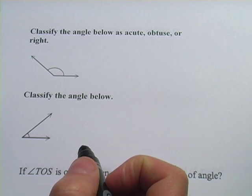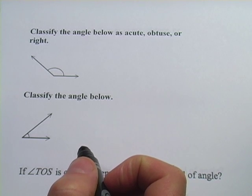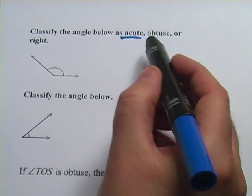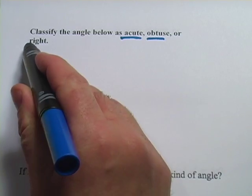In these problems, we're looking at types of angles, and there's three types of angles that you should know about. One is called acute, one is called obtuse, and one is called right.